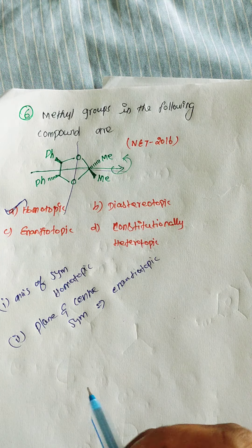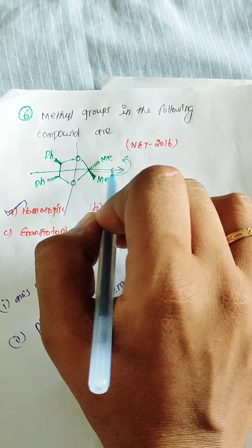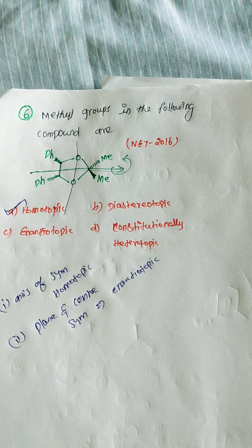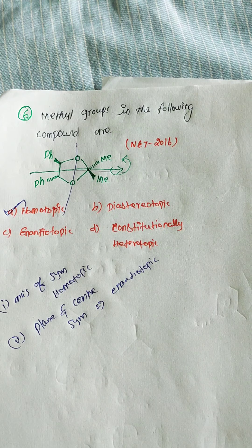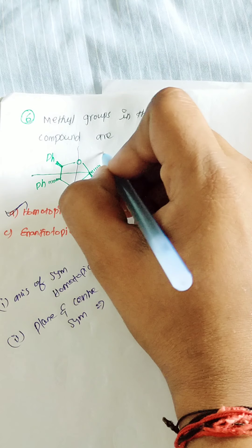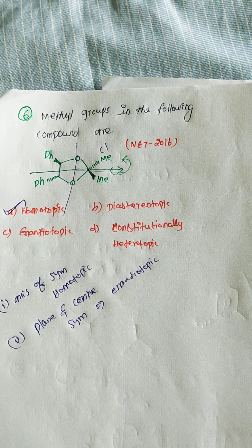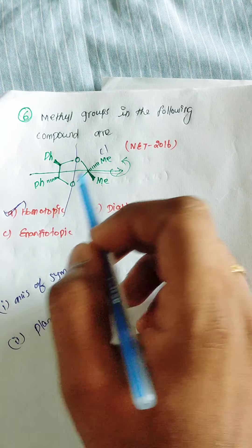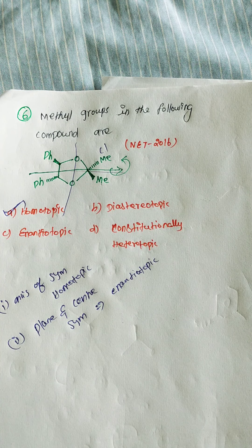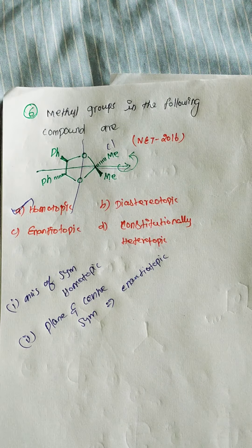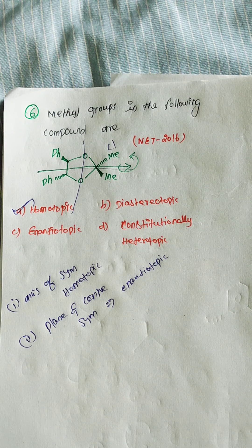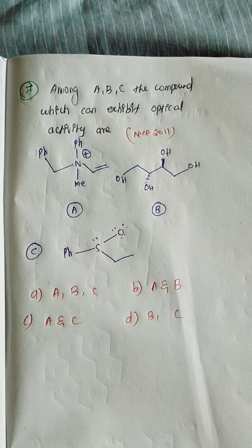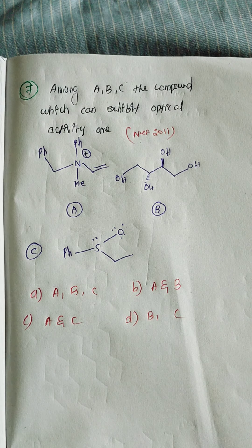Now addressing why enantiotopic involves a chiral center: if a chiral center is present, we look at pro-chirality. If we replace one methyl group with chlorine and assign priorities, the two identical methyl groups give the same kind of attachment, so the absolute configuration remains the same — confirming it is homotopic.